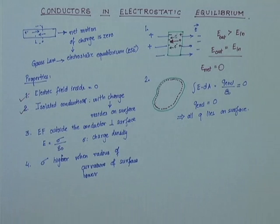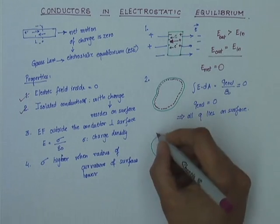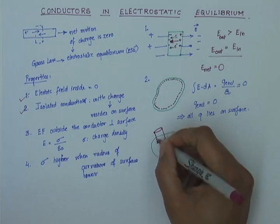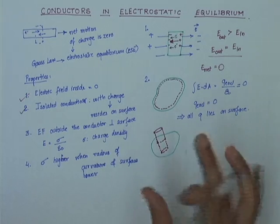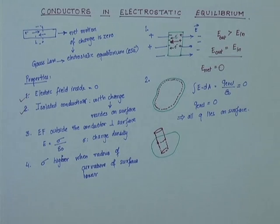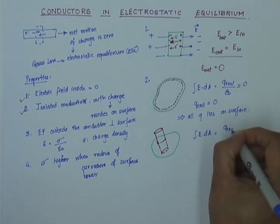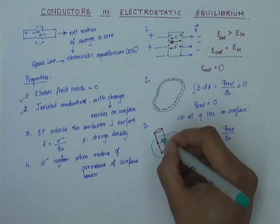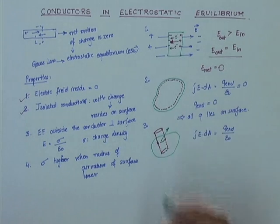For property 3, let us consider a conductor again but now use a cylindrical Gaussian surface: half of it is outside the conductor and the rest half is inside the conductor. Now let us discuss the direction of E at the surface. For argument's sake, assume E acts at some angle to the surface — not perpendicular and not parallel, but at some angle θ. The moment E acts at an angle to the surface, I can decompose E into a vertical and a horizontal component, which means there is some horizontal component along the surface of the conductor.